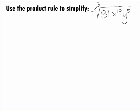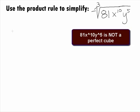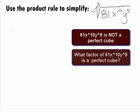Basically, we are going in the opposite direction with this rule than in Examples 6 and 7. 81x to the 10th y to the 5th itself is not a perfect cube, so we need to think to ourselves, is there a factor of 81x to the 10th y to the 5th that we can take the cube root of?